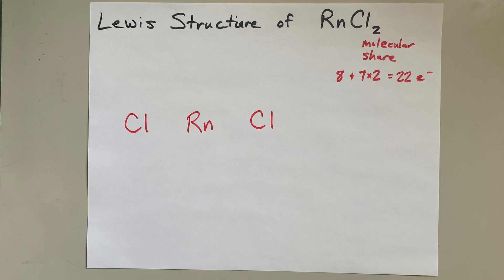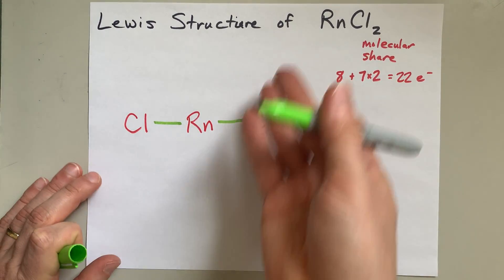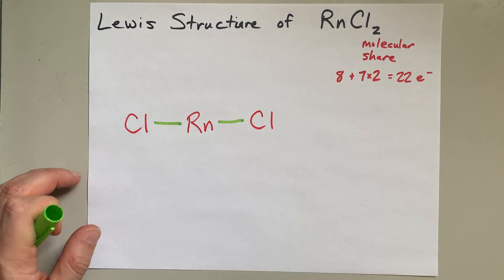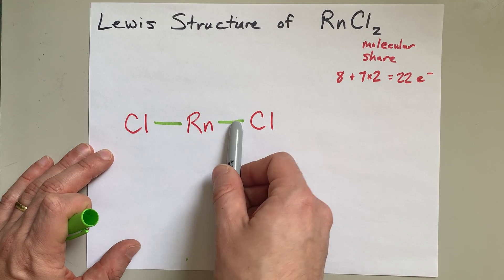Next, I connect my central atom with the outer atoms to prove that they are connected, because if they weren't, it wouldn't be a molecule. And I've dealt with 2, 4 electrons already.